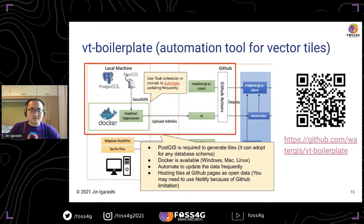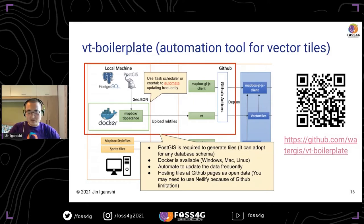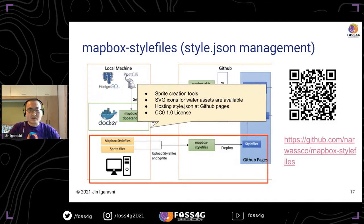This boilerplate extracts data from PostGIS to create vector tiles using Tippecanoe and uploads to GitHub Pages. We automate the procedure using the Windows task scheduler. Because we are using PostGIS, it is very easy to adopt any database — just modify the SQL to create vector tiles. For the style file, we also created some SVG icons for specific water assets, and a sprite file creation tool is included in the repository.